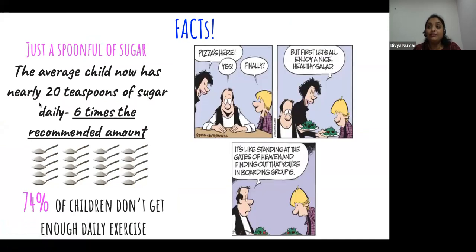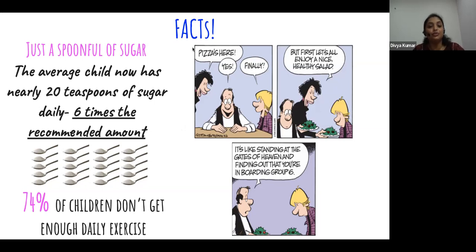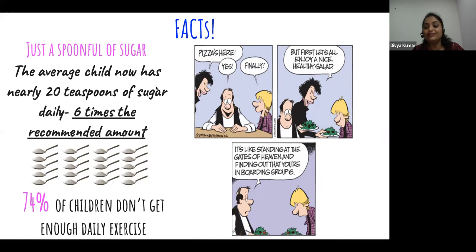In the lab, mice, rats, and guinea pigs are widely used because they mimic human physiology. Here's a key fact: 74% of children don't get enough daily exercise. The average child now consumes 20 teaspoons of sugar - not literally spoon-feeding sugar, but through drinks like coke and sugar in different forms - which is almost six times more than the recommended amount. The cartoon clearly depicts our state of mind: you enjoy junk food, but when your mom gives you salad, it takes a long time to be convinced to eat it. More of us are inclined toward unhealthy diet versus healthy diet.